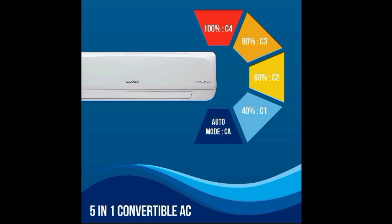The 5-in-1 converter has multiple capacity modes. The second option lets you choose a capacity setting and receive notifications. The third option, C3, allows you to adjust the AC to a specific capacity. The fourth option, C3, lets you choose capacity at 80%. The fifth option, C4, gives you another capacity level to choose from, allowing flexible power usage based on your needs.